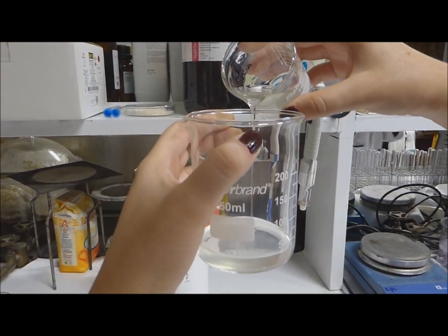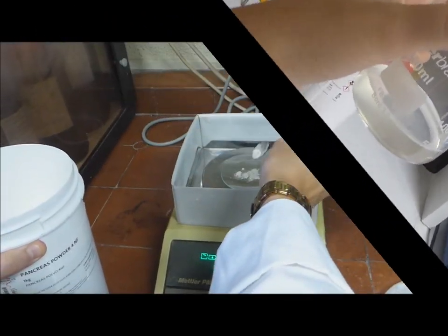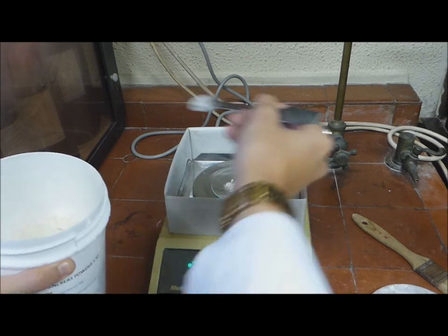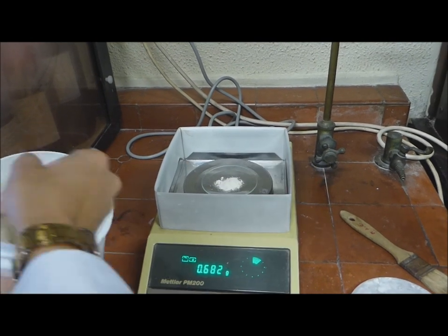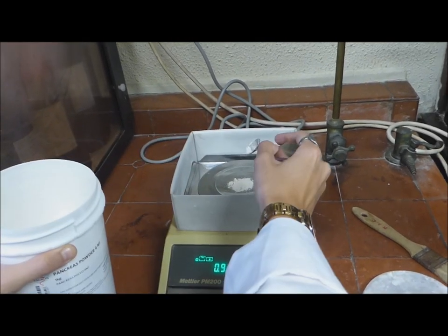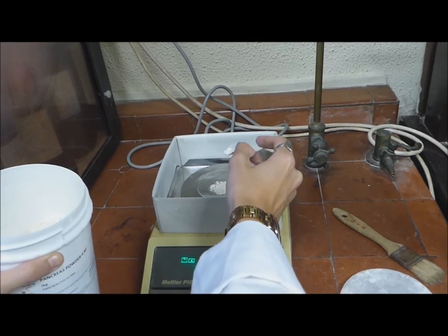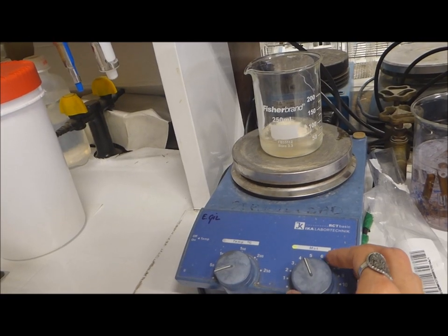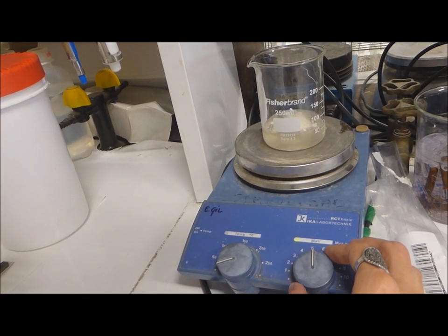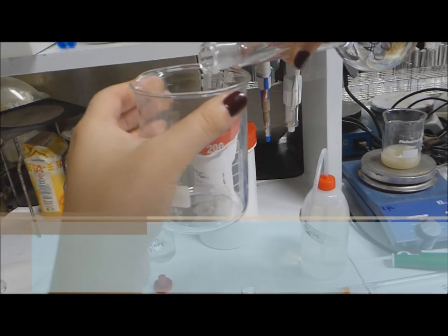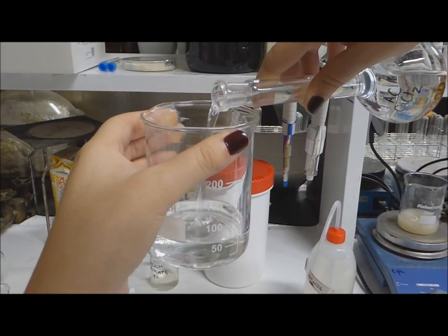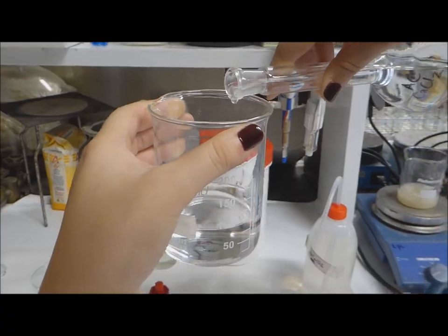We take 50 milliliters of sodium alginate and we pour it into a 250 milliliters tumbler. We add one gram of pancreatine and we shake it with a magnetic agitator until total dispersion. In another tumbler we put 100 milliliters of calcium chloride and we keep it on shaking.